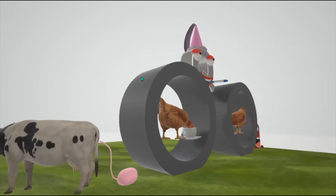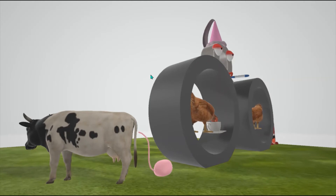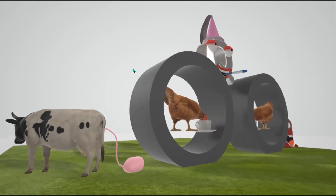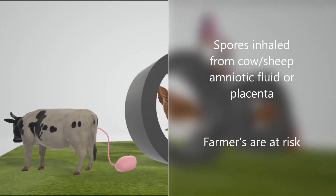Over here we have this random cow with his placenta coming out, to help us remember that transmission is through spores inhaled as aerosols from cattle or sheep amniotic fluid or placentas. That's why farmers are at risk.